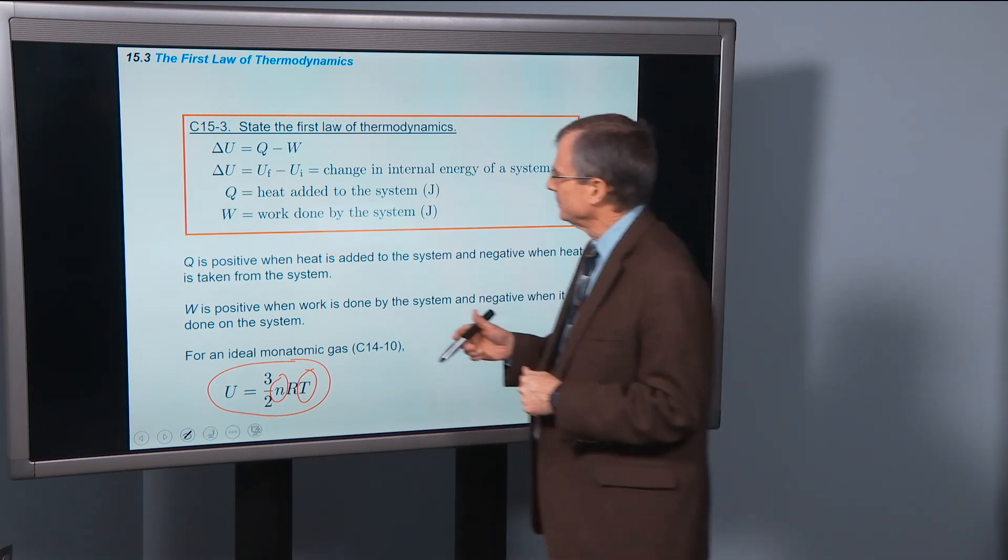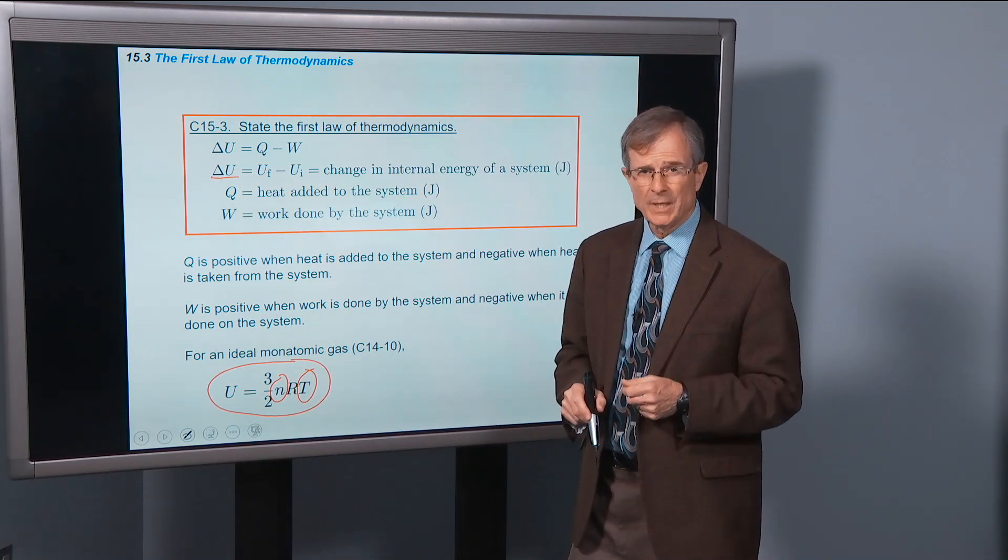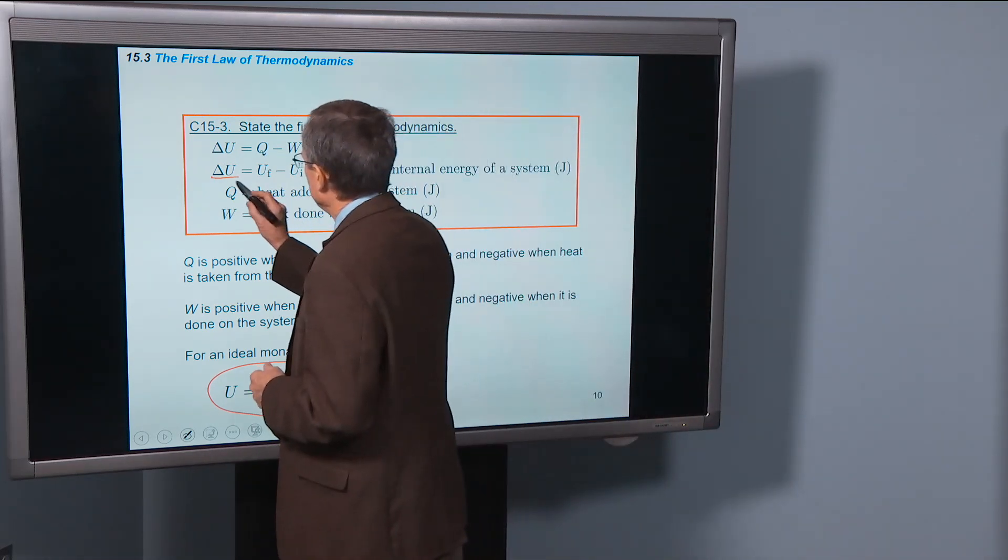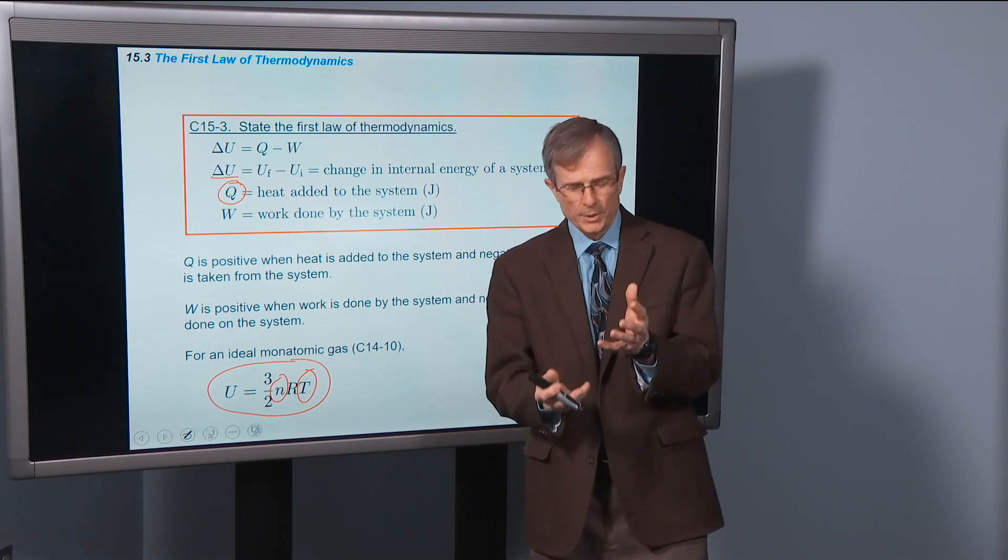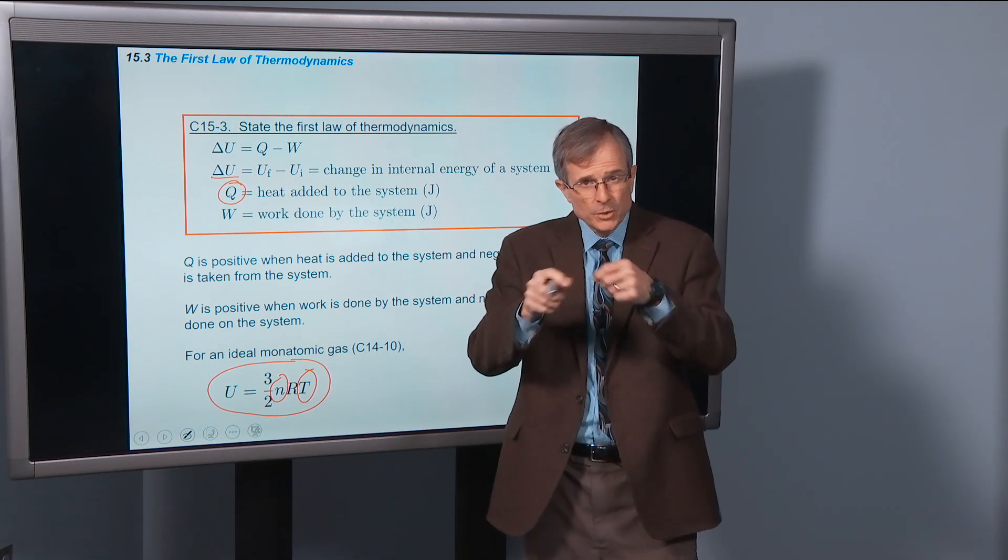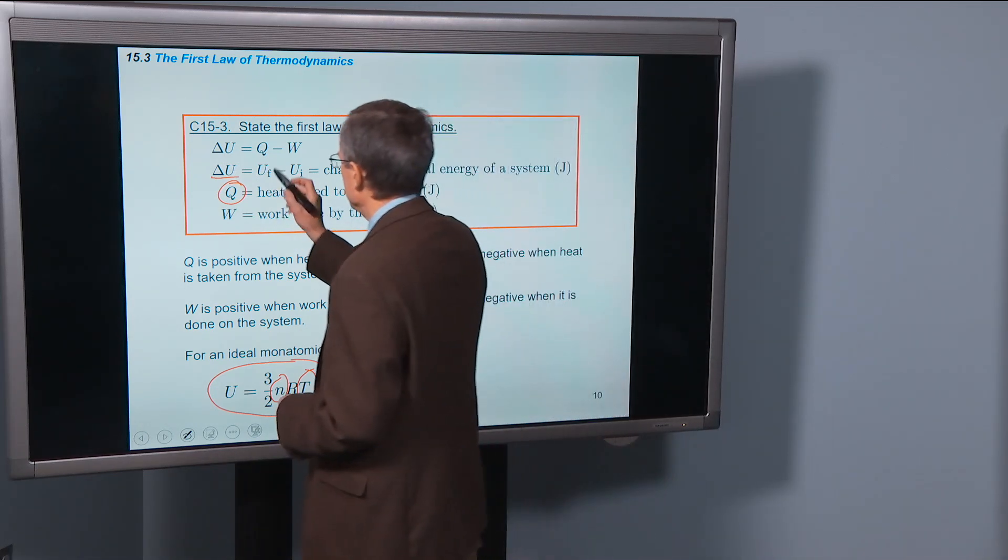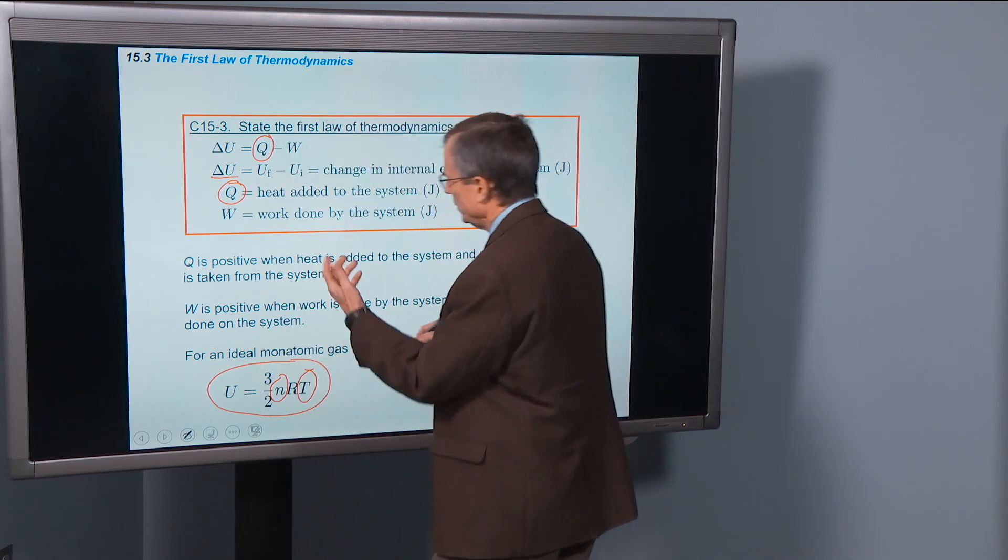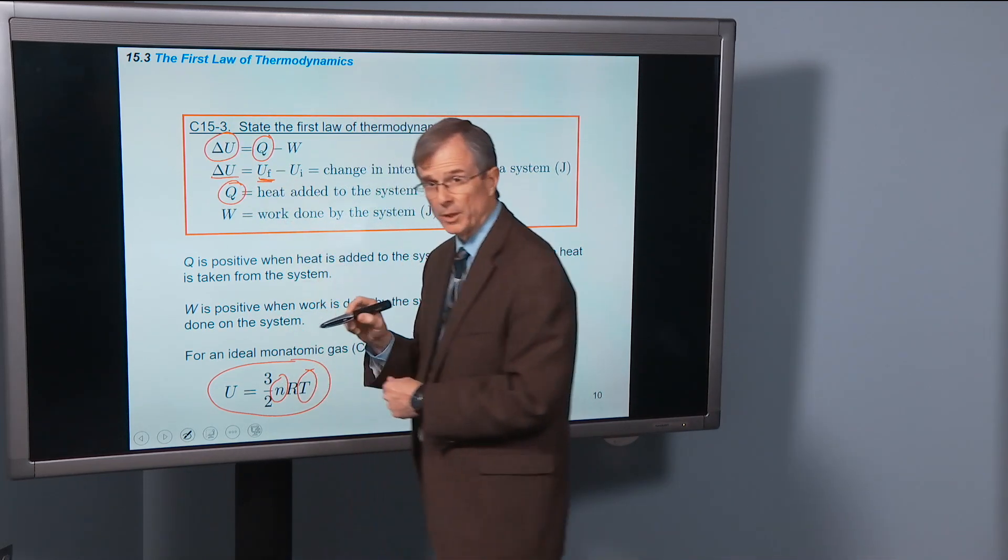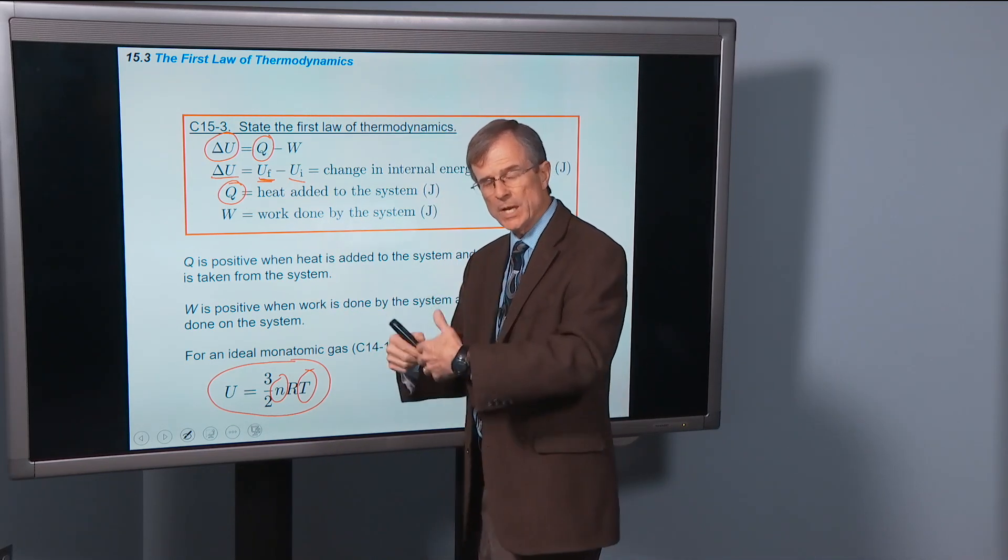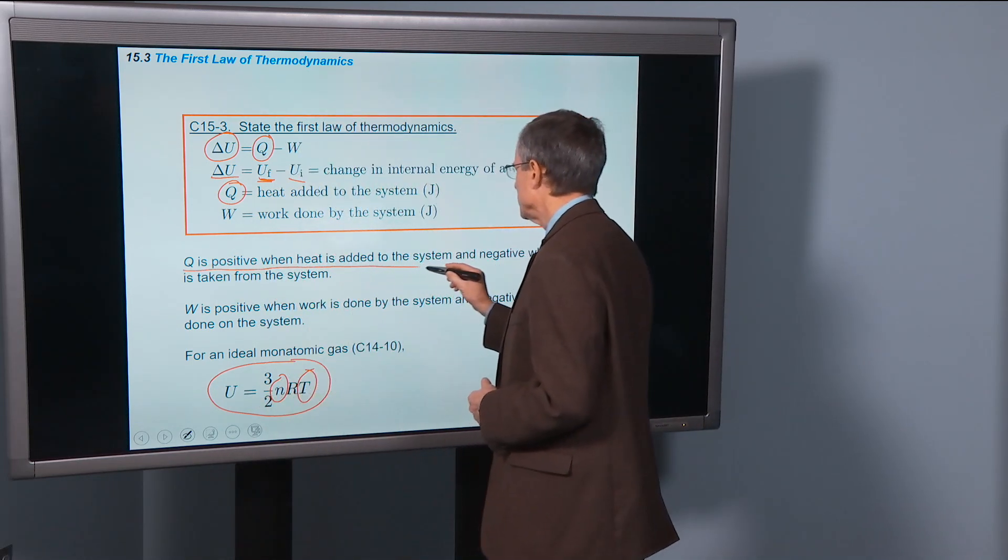So that energy will change if you do one of two things. If you add heat to the system, so you take that hot air balloon and heat up the air a little bit, add heat to it, that'll increase the amount of internal energy. So if there's heat added to the system, then you can increase the final internal energy. The change in the internal energy will be positive. Q is positive when heat is added to the system.